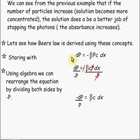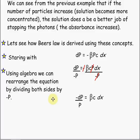Let's start off with our original equation. The change in power is proportional to the constant of proportionality, the initial power, the concentration, and the path length. Using some algebra, we rearrange our equation by dividing both sides by negative P, and we end up with: negative change in power over the initial power is equal to the constant of proportionality times the concentration times the path length. Remember, these are two constants times the path length.